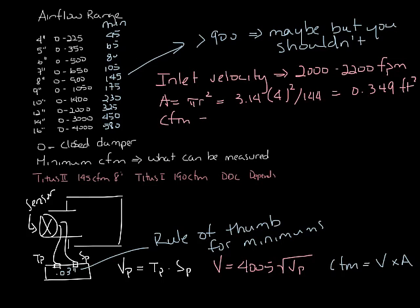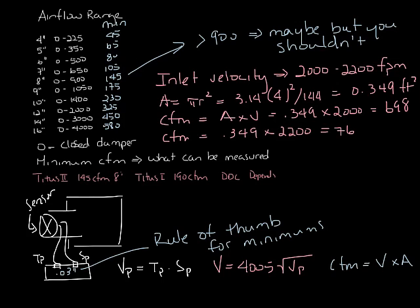From there you can calculate the CFM at 2,000 feet per minute as being 0.349 times 2,000, or 698 CFM. Or at 2,200 feet per minute, which comes out to 768 CFM.